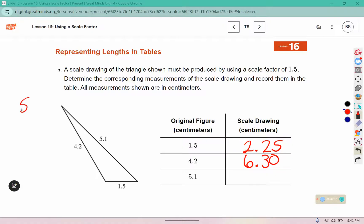And for 5.1 times the scale factor of 1.5: 5 times 1 is 5, 5 times 5 is 25. One times 1 is 1, 1 times 5 is 5.